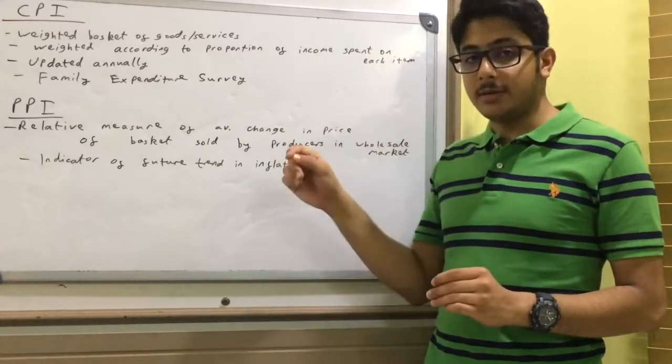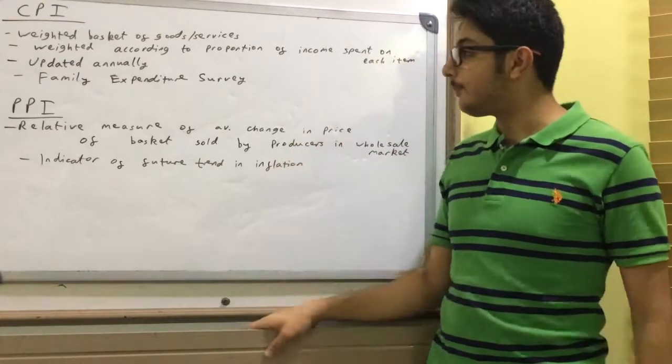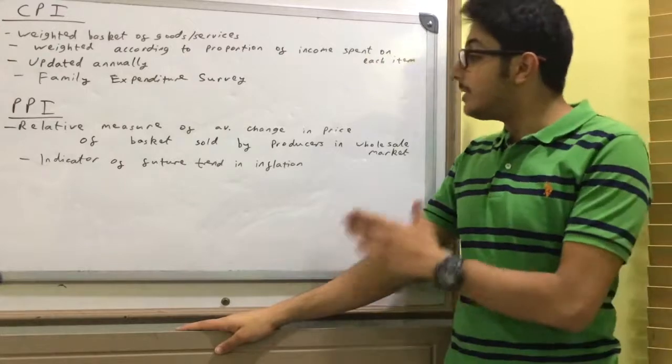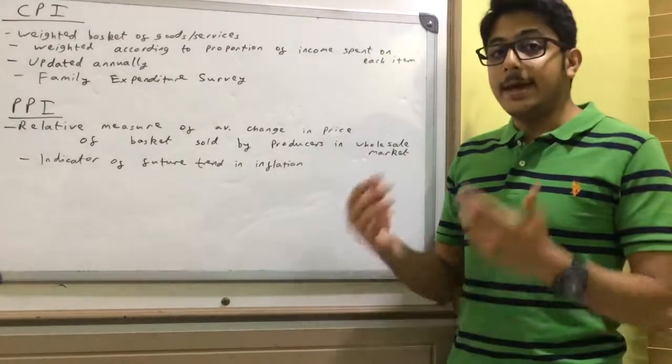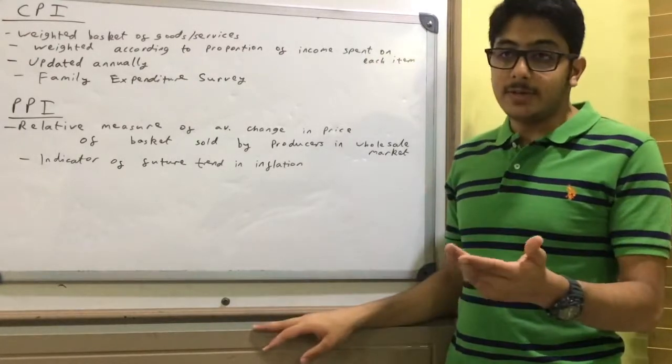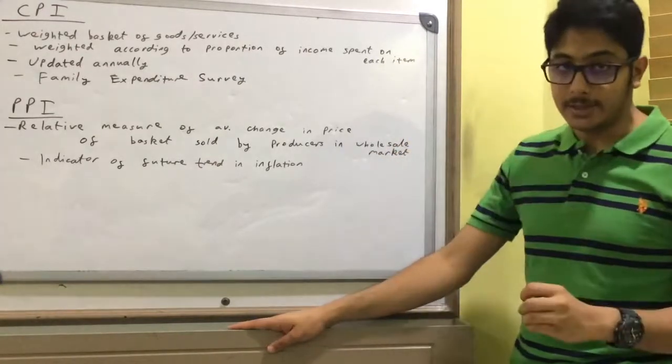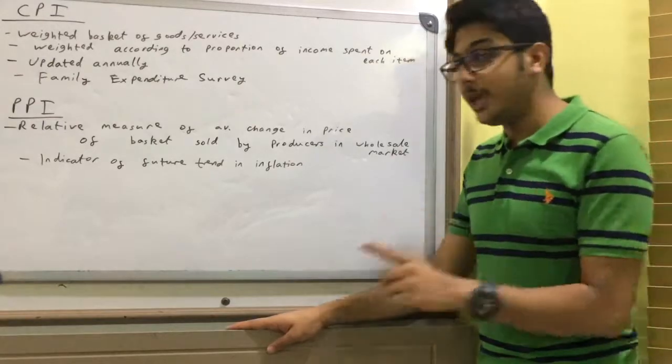The Producer Price Index is a relative measure of the average change in price of goods and services sold by producers and manufacturers at the wholesale market. The important thing about the PPI is it's an indicator of future trends in the pattern of inflation.